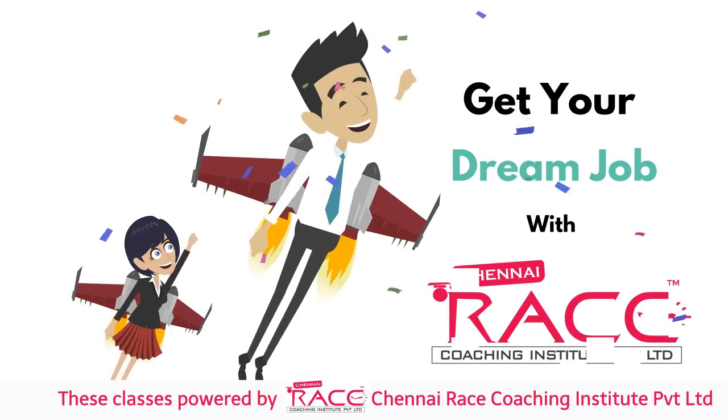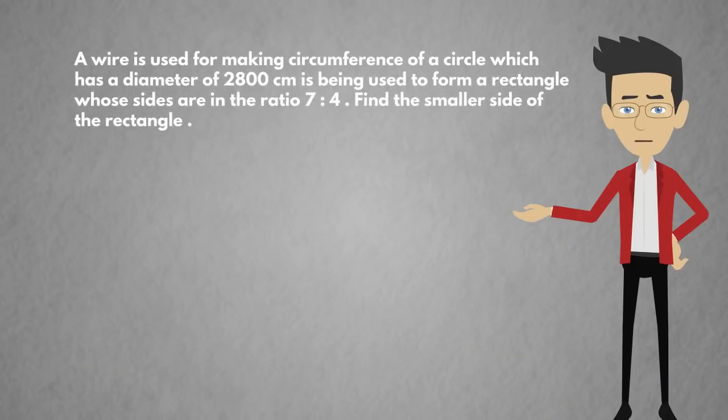Get your dream job with Chennai Rays Institute. A wire is used for making circumference of a circle which has a diameter of 2800 cm is being used to form a rectangle whose sides are in the ratio 7 is to 4. Find the smaller side of the rectangle.